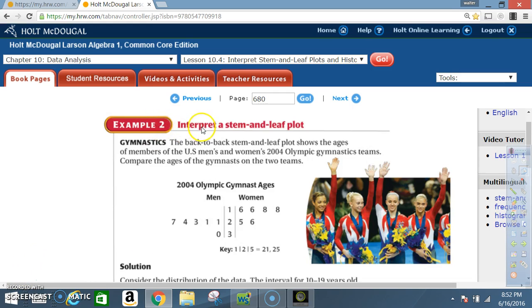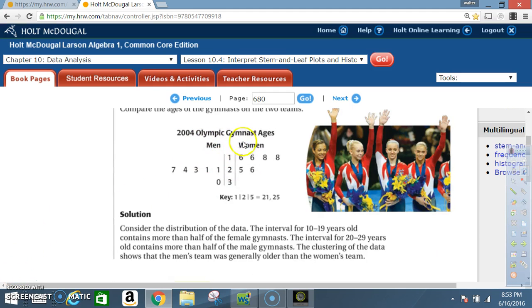Example 2: Interpret a stem and leaf plot. Gymnastics. The back to back stem and leaf plot shows the ages of members of the U.S. men's and women's 2004 Olympic gymnastic teams. Compare the ages of the gymnasts on the two teams. Now to read this stem and leaf, your key is one-two-five, which means twenty-one and twenty-five. Once again, your key is twenty-one and twenty-five.